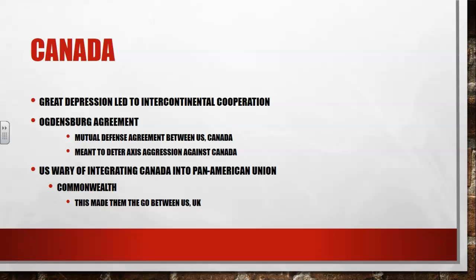We're going to get the Ogdensburg Agreement, which is a mutual defense agreement between the United States and Canada. This is going to happen as a way of deterring Axis aggression against Canada. They believed that most of the Axis powers would not directly attack the United States; however, they could directly attack Canada because Canada wasn't quite as powerful at this time. So if you get this mutual defense agreement, an attack against one is an attack against both — it's going to be a way of protecting Canada.